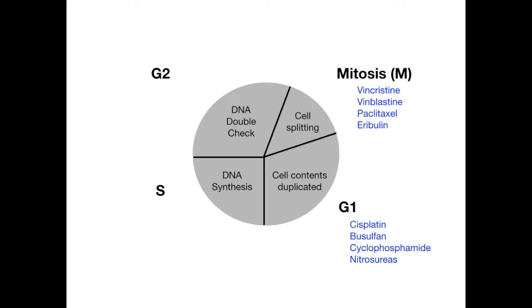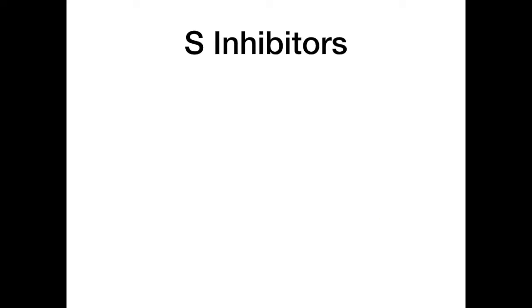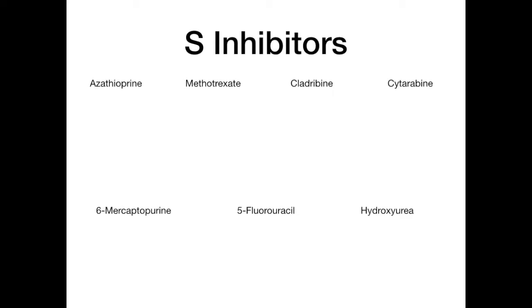The hardest category to memorize is the S phase, where DNA synthesis occurs. The agents you need to know are azathioprine, cladribine, cytarabine, 5-fluorouracil, 6-mercaptopurine, hydroxyurea, and methotrexate. This is definitely the toughest category because there are seven drugs, but I'll do my best to simplify it.